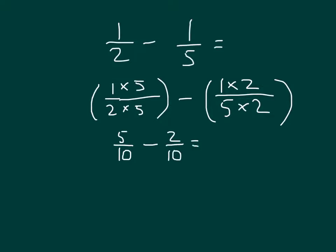So now that our denominators are the same and we have like units, we can just subtract 5 minus 2, which is 3, and that is 3 tenths. 3 tenths is in simplest form, because the only thing that we can divide 3 by is 3, and 10 is not divisible by 3. So our whole equation: 1 half minus 1 fifth equals 3 tenths.